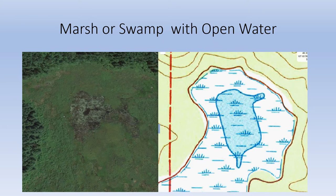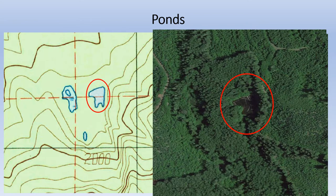The contour lines run around the edge of the marsh, connecting points of equal elevation. Satellite images often hide small water features, especially small streams and ponds.